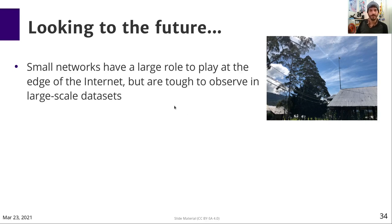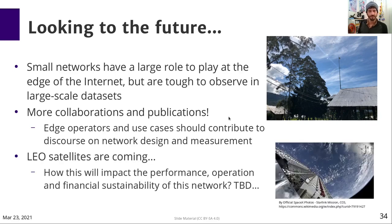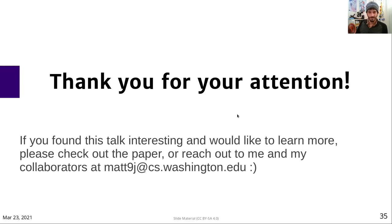Looking towards the future, I believe that small networks have a large role to play at the edge of the internet, particularly because local entrepreneurs have insights into where a network might be profitable in places you might not expect. But these small networks are tough to observe in large-scale datasets conducted at the web and internet scale. We need more collaborations and publications partnering with these small networks, and edge operators and use cases need to contribute to discourse on network design and measurement. Also, there are new networks coming, particularly low Earth orbit satellites like Starlink and Kuiper. Thank you for your attention. If you found anything interesting or would like to learn more, please check out the paper or reach out to me.